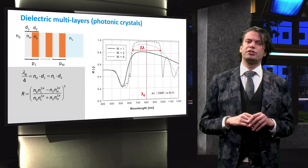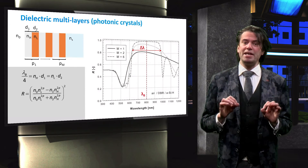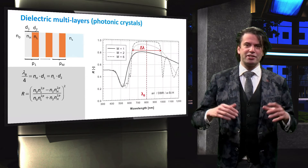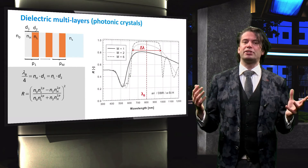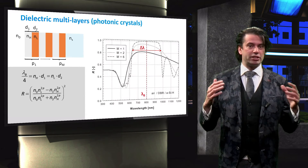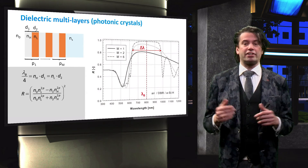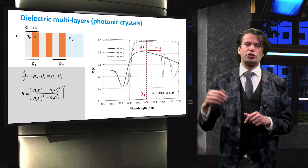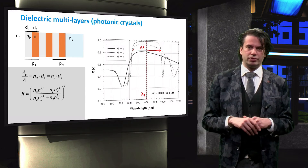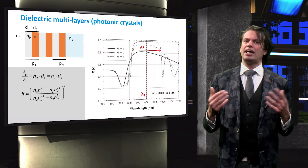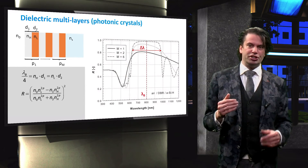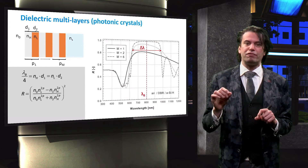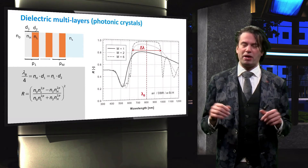The number of pairs, denoted by capital M, also determines the reflectivity. A single pair, denoted by P, contains two dielectric layers. The greater the number of pairs or refractive index mismatch, the higher the reflectivity. The influence of the number of pairs is shown in the graph, where we can see that the dielectric backreflector is a near-ideal reflector for a relatively large spectral range.